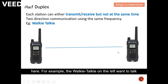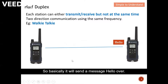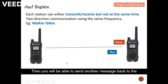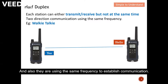In the animation, the walkie-talkie on the left wants to talk to the one on the right, so it sends the message 'Hello, over.' After the second walkie-talkie receives the message, it sends a reply — for example, 'Yes' — back to walkie-talkie one. From here you can see that communication does not happen at the same time, and both devices use the same frequency to establish communication.